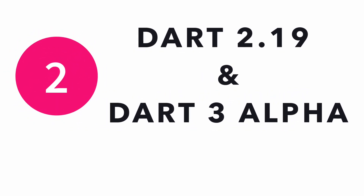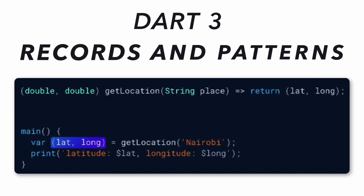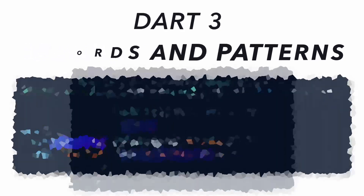Coming to the second key takeaway: Dart 2.19 is the new version compatible with Flutter 3.7, and Dart 3.0 alpha release is available for preview. With Dart 3.0, we can return more than one value from a function — these are called records. With patterns, it would be possible to destructure the incoming values and assign them directly to fields or variables. This is a feature available in Kotlin since day one, so gradually Dart is also becoming a more matured language.